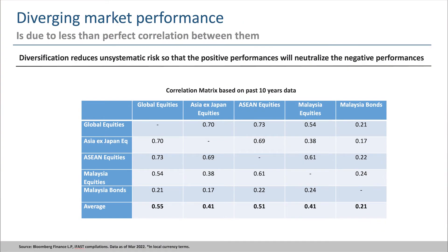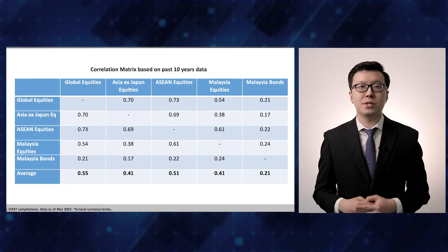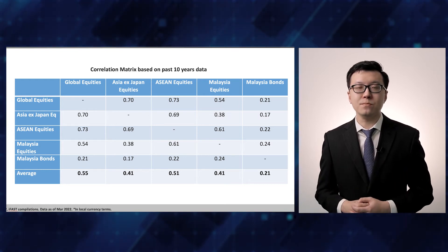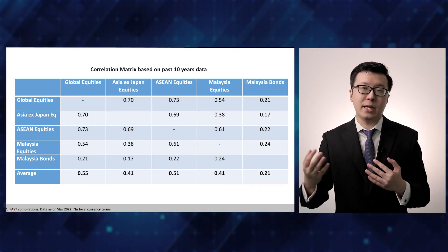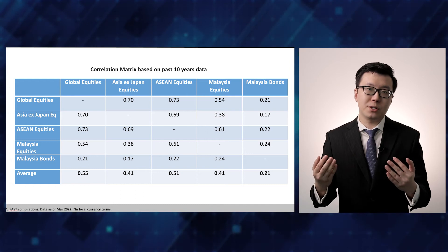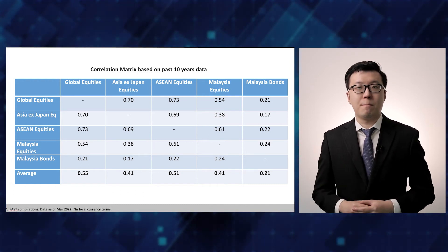This correlation matrix illustrates the correlation of each asset class versus one another, which is represented by the correlation coefficient number. The higher the number, the higher the correlation and vice versa. What we want is to combine assets that have low correlation, therefore the closer to zero, the better.